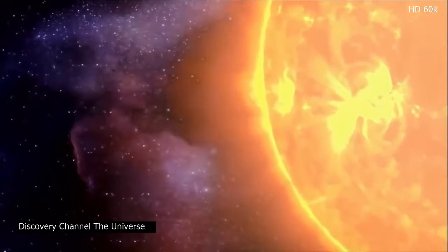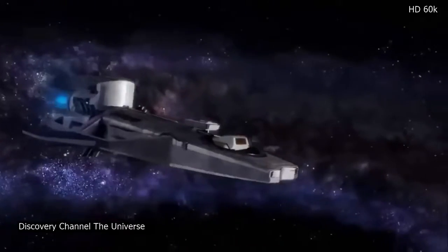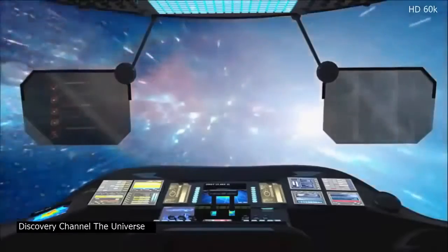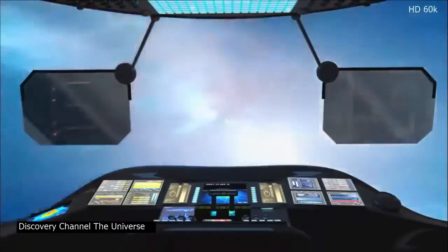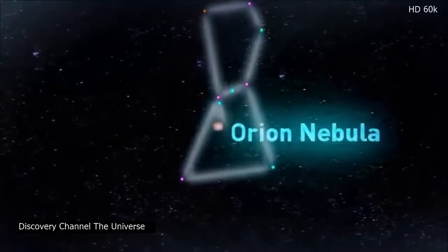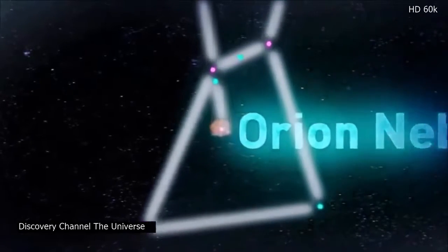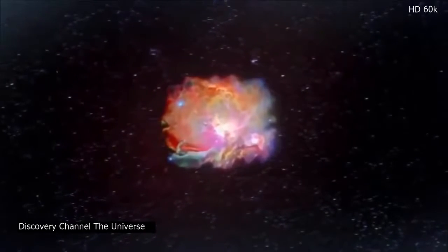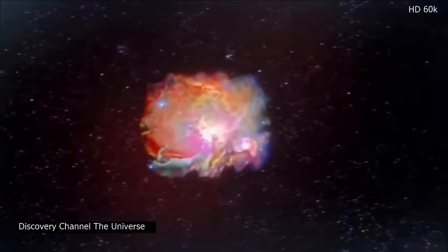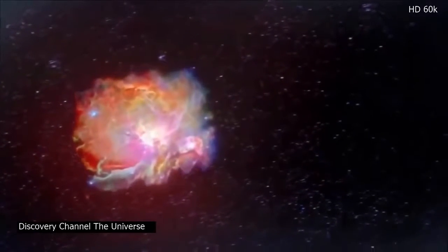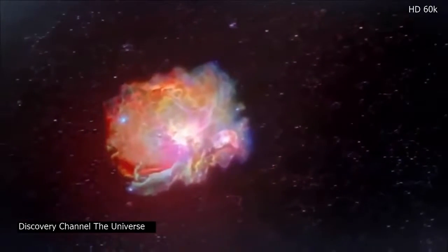What would it have been like for the sun when it was part of a cluster? To find out, we file a flight plan for a place where stars are forming in a cluster right now. We're headed 1,500 light years from Earth to the Orion Nebula, which looks like a fuzzy star in Orion's sword. Up close, though, it's a spectacular light show. The Orion Nebula is one of the great stellar nurseries that we know of. It's forming stars right now.